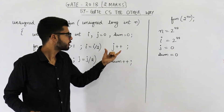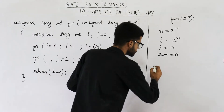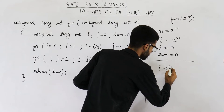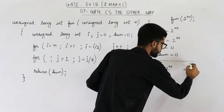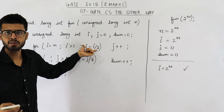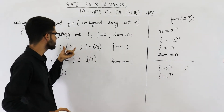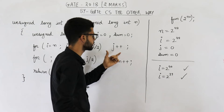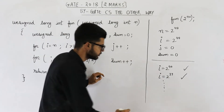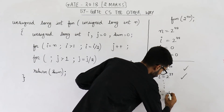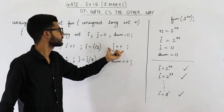Let us see how many times we are going to enter this loop. Initially i is 2 power 40, which is greater than 1, so we execute j plus plus. Then i is updated: i becomes i divided by 2, which is 2 raised to the power 39. It is still greater than 1, so we enter the loop and execute j plus plus again. i will keep decreasing: 2 to the power 38, 2 to the power 37, and so on. Eventually i will become 2 raised to the power 1. Now 2 raised to the power 1 is still greater than 1, so this time also we will enter the body of the loop and execute j plus plus.